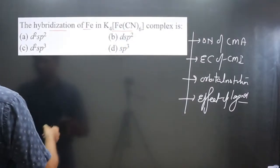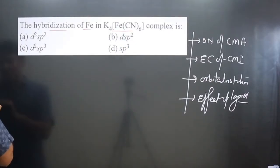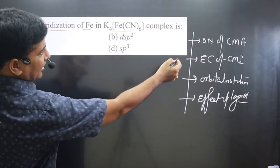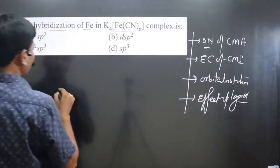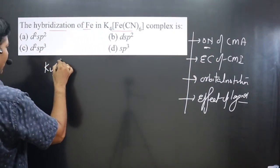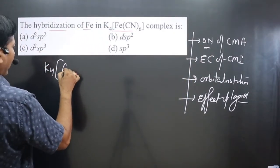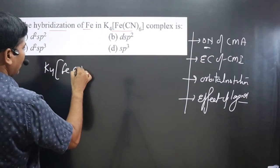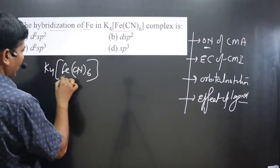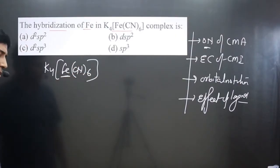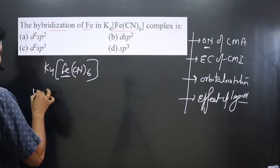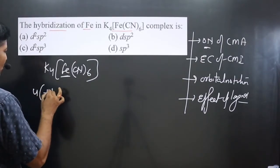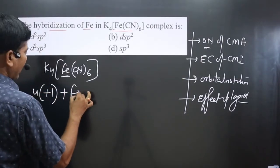First of all, we find the oxidation number of the central metal atom. The complex is K4Fe(CN)6. Iron is the central metal atom. There are 4 potassium atoms, each in +1 oxidation state.